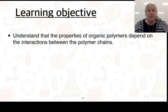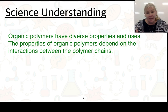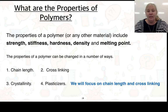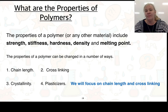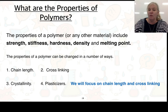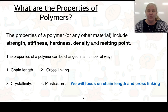Our next learning objective is that we need to understand that properties of organic polymers will depend on interactions between the polymer chains. The properties we look at in Year 11 include strength, stiffness, hardness, density, and melting point. These can be changed by: chain length, cross-linking, and — covered in the presentation but not this video — crystallinity and plasticizers. We're going to focus on chain length and cross-linking.